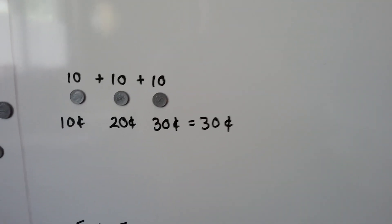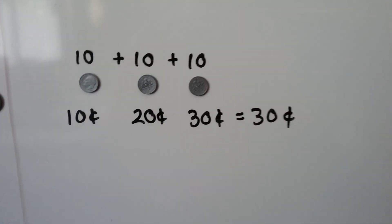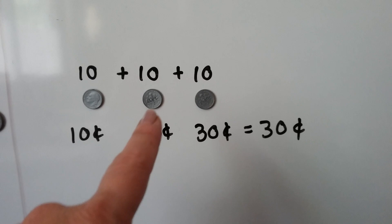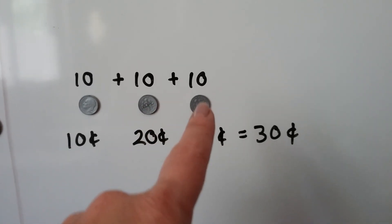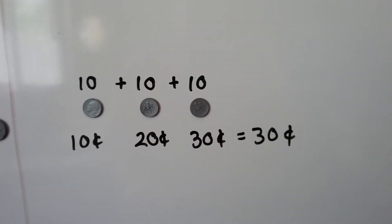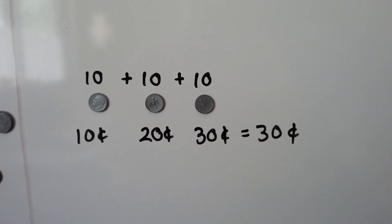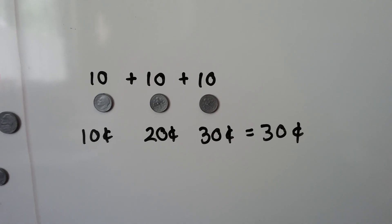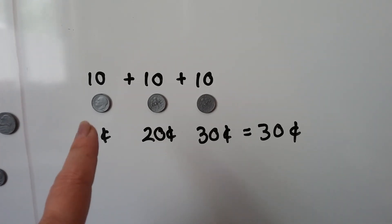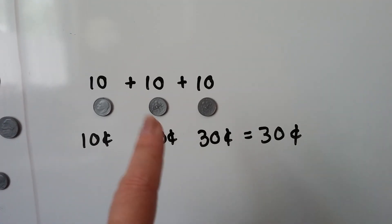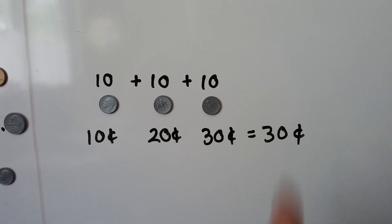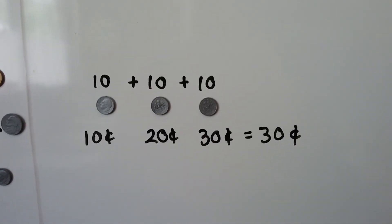Let's try this one. Here we have a dime, a dime, and a dime. That's ten, and ten, and ten. We can find the total by counting on. We can also skip count by tens: ten, twenty, thirty. That's thirty cents.